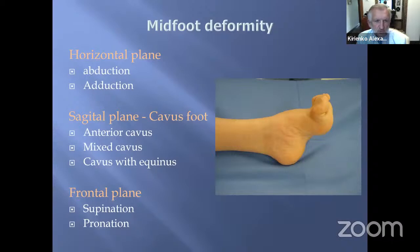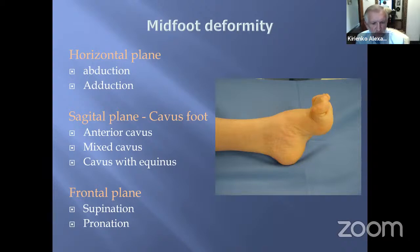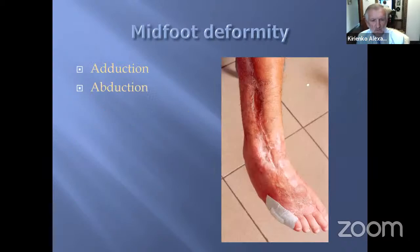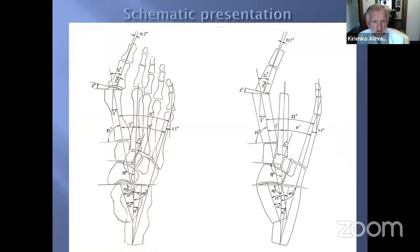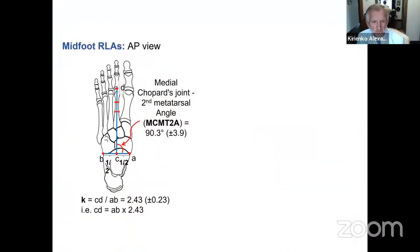Midfoot deformity correction. The midfoot may have deformity in two or three planes: in the horizontal plane as abduction or adduction of the forefoot; in the sagittal plane as cavus — either anterior cavus affecting only the forefoot like equinus of the forefoot, mixed cavus involving both forefoot and calcaneus, or cavus accompanied with equinus when the talus is in equinus position. In the frontal plane, the forefoot may be in supination or pronation. For correction of abduction or adduction, we design the axis of the forefoot based on the medial superior joint line as AB, then recalculate the axis and length of the second metatarsal, which crosses at 90 degrees.